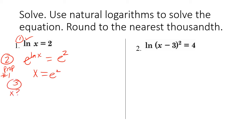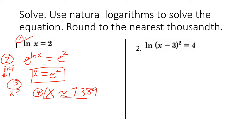Step three is to solve for x — x is already by itself. The exact value is x equals e squared. Using a calculator for the approximate value, e squared gives us approximately 7.389. When we check, natural log of e squared equals two — using property number two, the natural log undoes the e, leaving two equals two, which is a true statement.